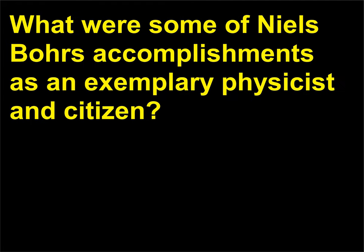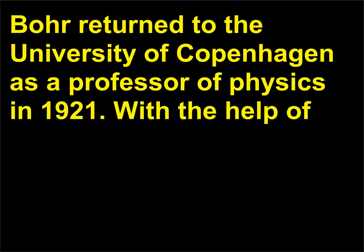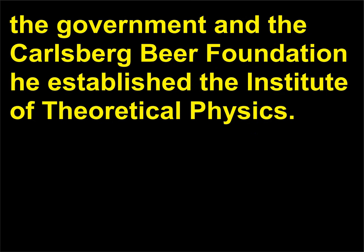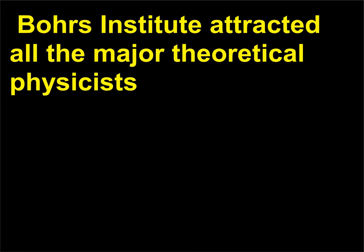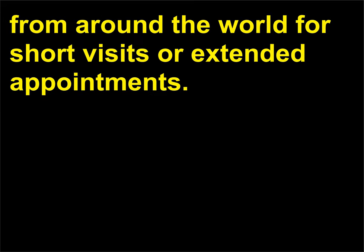What were some of Niels Bohr's accomplishments as an exemplary physicist and citizen? Bohr returned to the University of Copenhagen as a professor of physics in 1921. With the help of the government and the Carlsberg Beer Foundation he established the Institute of Theoretical Physics. Bohr's institute attracted all the major theoretical physicists from around the world for short visits or extended appointments.